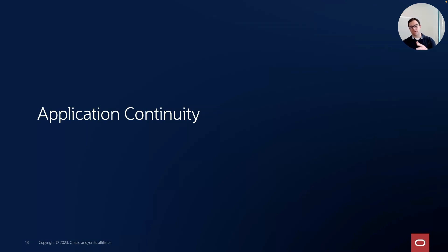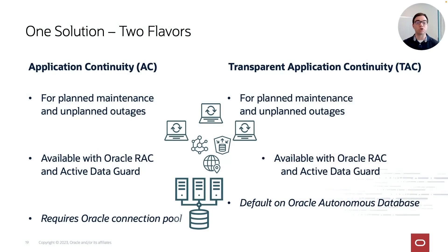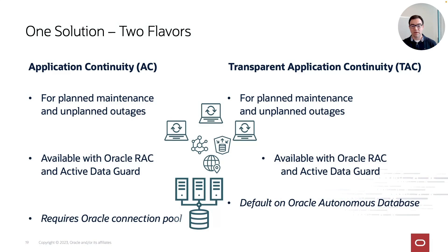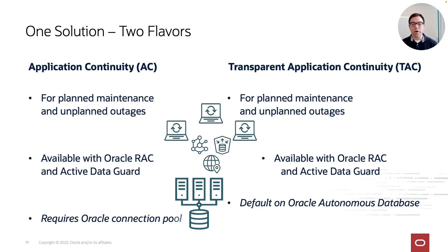Application Continuity is basically one solution that comes in two flavors. The base solution is Application Continuity — very flexible, helping ensure continuity for a lot of use cases. The second flavor is Transparent Application Continuity (TAC), which aims to do the same in a transparent way. Both work for planned maintenance and unplanned outages, and both are available with Oracle Active Data Guard.